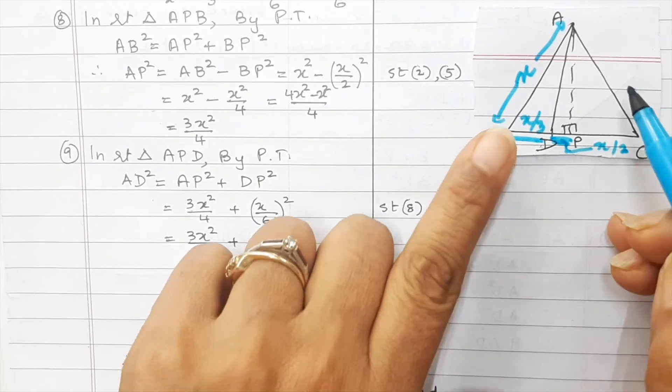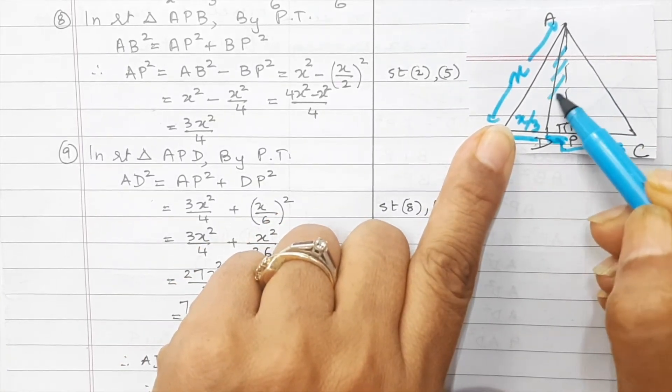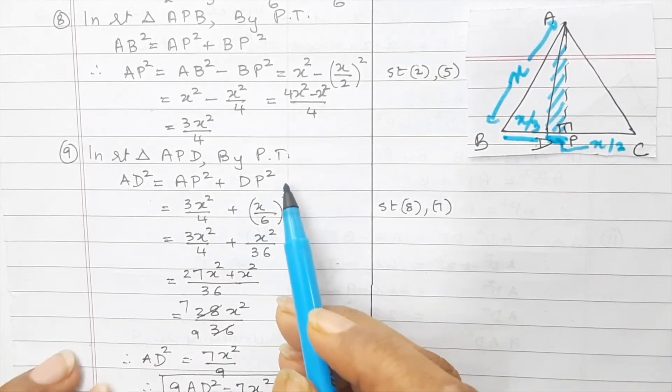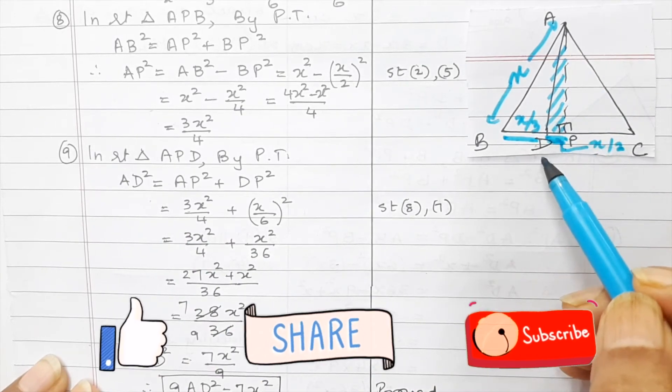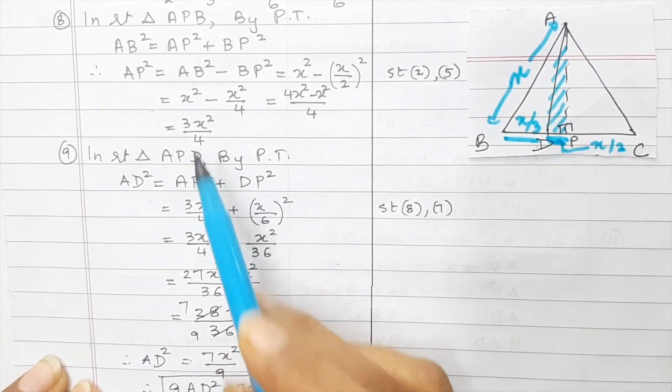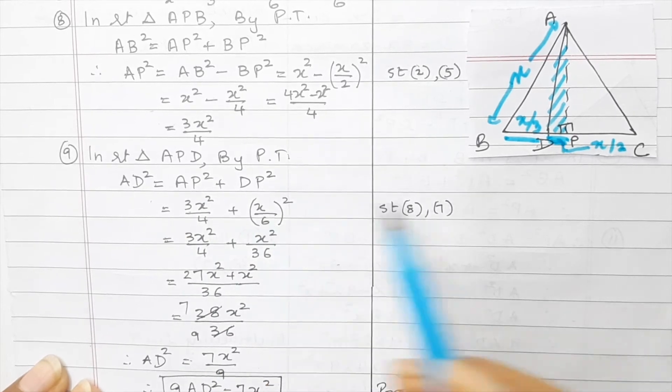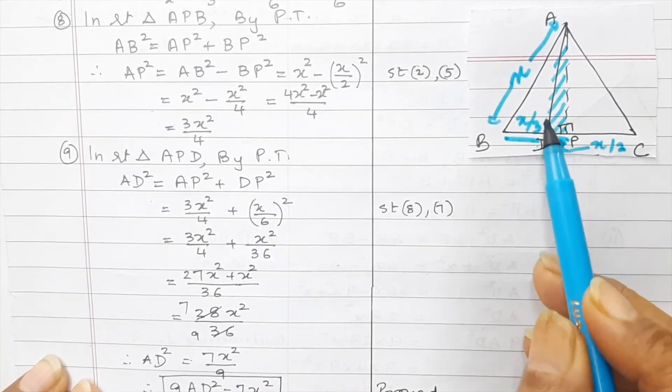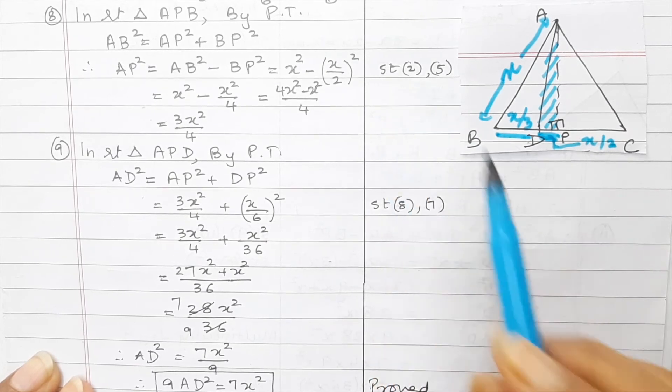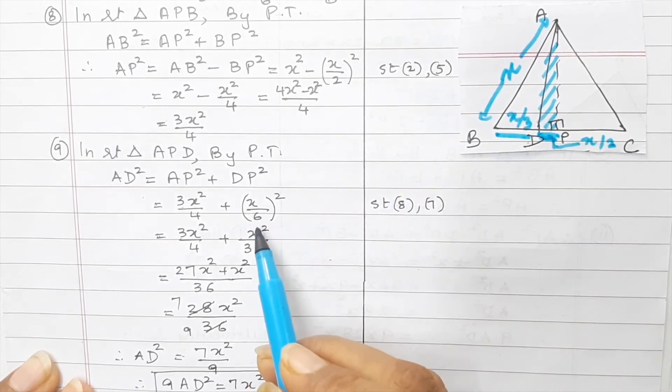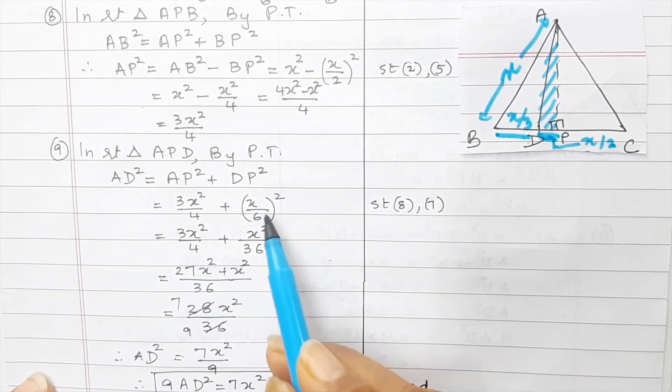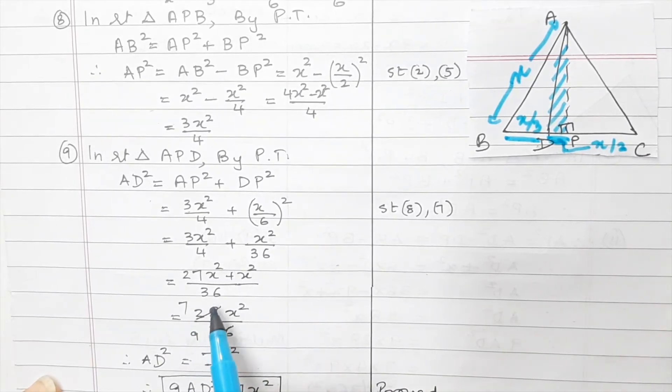Now because we need AD square, we need to take this triangle. So in this right triangle, by Pythagoras theorem, we will have AD square is equal to AP square plus DP square. Now your AP square, we already have the value that is 3X squared upon 4. Now DP over here, we found out earlier in statement number 7, it was X by 6. So you can go back and check the working of that once again. But we are just going to substitute DP is X upon 6. So now we just simplify this. 3X squared upon 4 plus this becomes X squared upon 36. We take the LCM 36.